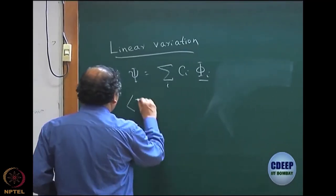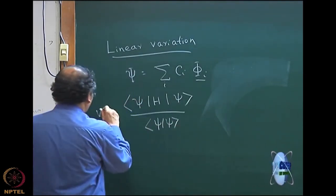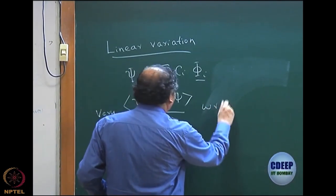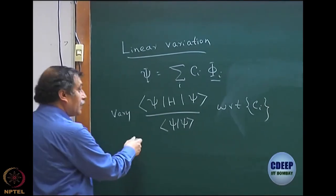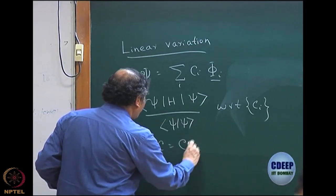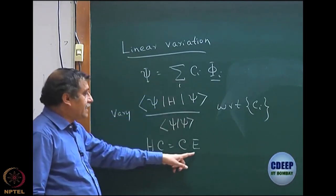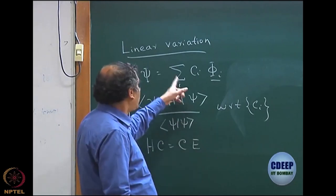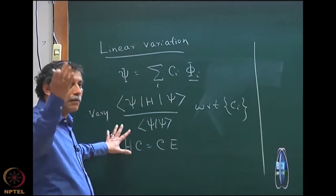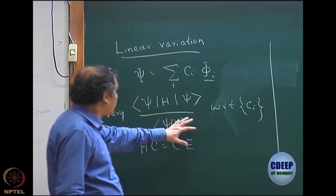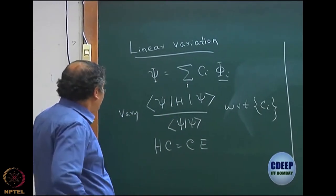The theorem says that if I do a variation by the normal way — varying with respect to the coefficient C_I — then the result that you get is an eigenvalue equation, which is HC equal to CE in general form, where C is the coefficient matrix containing all columns of the eigenvectors and E is the diagonal matrix consisting of all the eigenvalues of this problem.